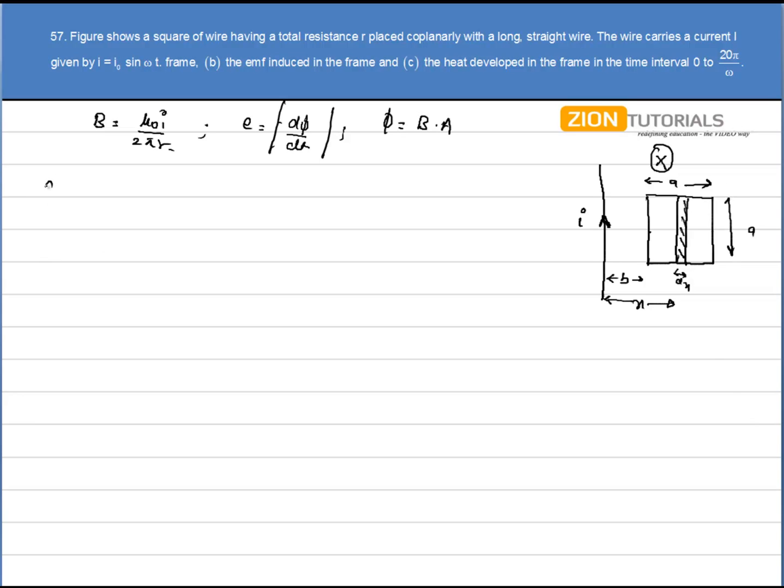So this d phi that is the small flux passing through this elementary width is given by magnetic field that is mu not i by 2 pi x into area. Area is length into breadth that is A into dx.